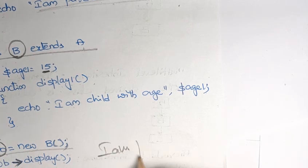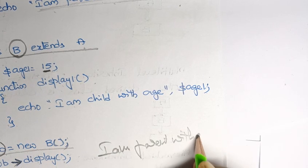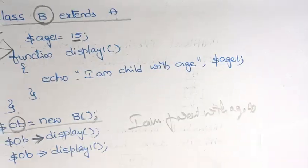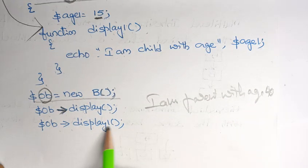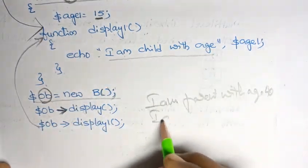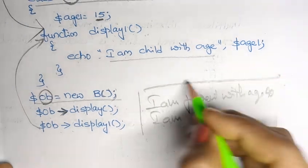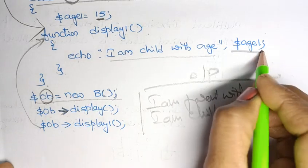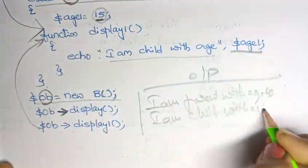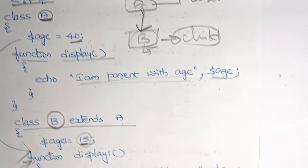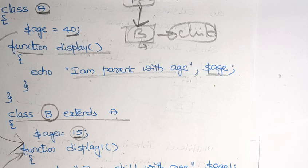Calling `$ob->display()` transfers control to the display function in A, which prints 'I am parent with age 40'. Calling `$ob->display1()` transfers control to the display1 function in B, which prints 'I am child with age 15'. This is the single inheritance concept — please write your own program to practice.